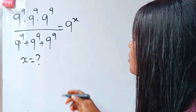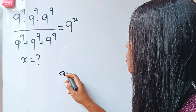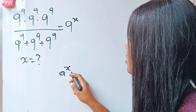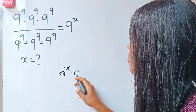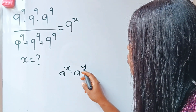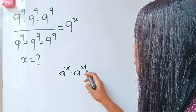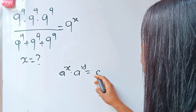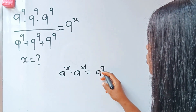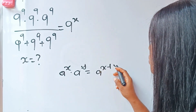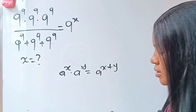This law states that a to the power of x multiplied by a to the power of y is equal to a to the power of x plus y.